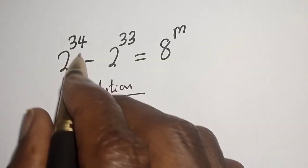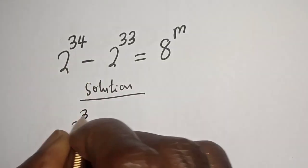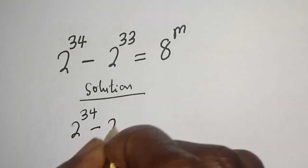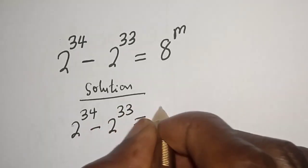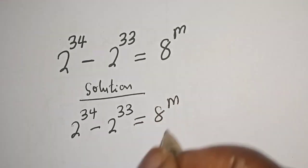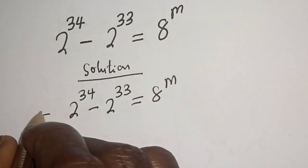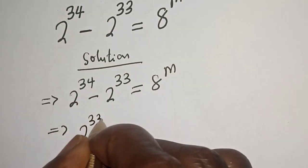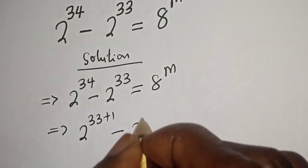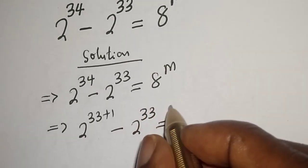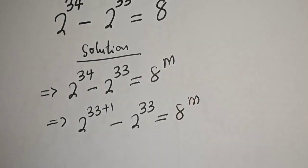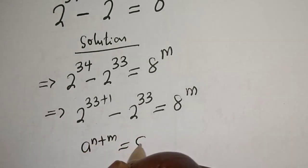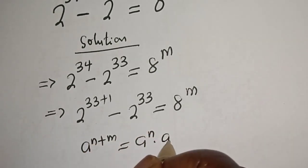2 raised to power 34 minus 2 raised to power 33 is equal to 8 raised to power m. 2 raised to power 34 can be written as 2 raised to power 33 plus 1, minus 2 raised to power 33, is equal to 8 raised to power m. Take note of this exponential rule: a raised to power n plus m is equal to a raised to power n multiplied by a raised to power m.